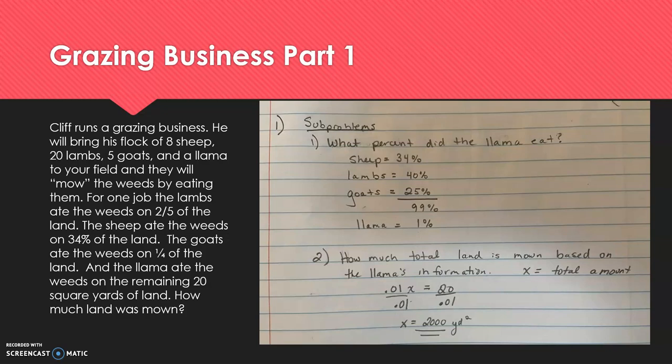So how much total land is mown based on the llama's information? We would do 0.01x equals 20, divide that out, and we get 2,000 square yards total has been cleared by these animals and their grazing. For a bonus for test two, you are going to attempt, if you'd like, the grazing business part two problem on page 195. So you will need this information, and you'll build on that to solve for a bonus opportunity, grazing business part two.